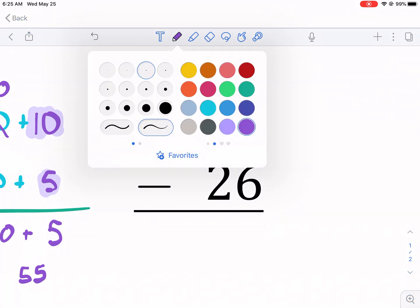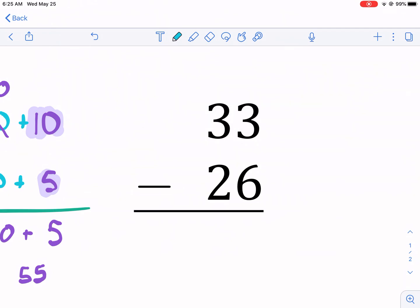When I start off in my ones place, 3 is smaller than 6, so I need to borrow. I'm going to change this to 2, and I'm going to change this number to 13 instead of 3. So I have that 13 there. 13 minus 6, that gives me 7. And now I do 2 minus 2, that gives me 0.